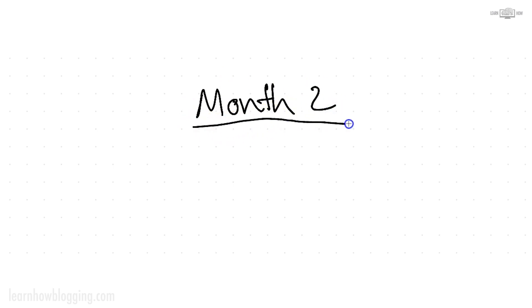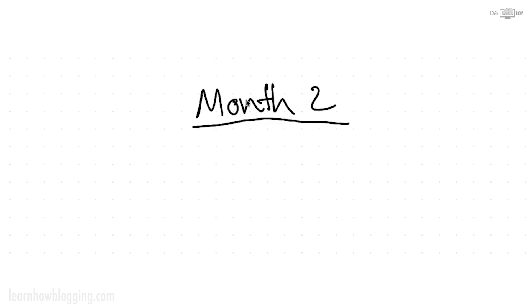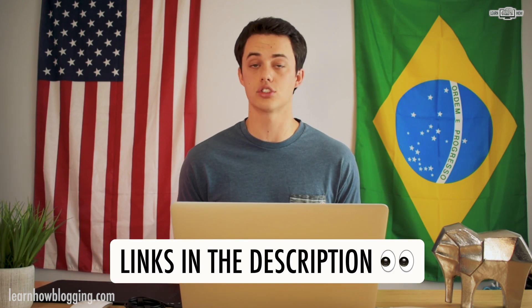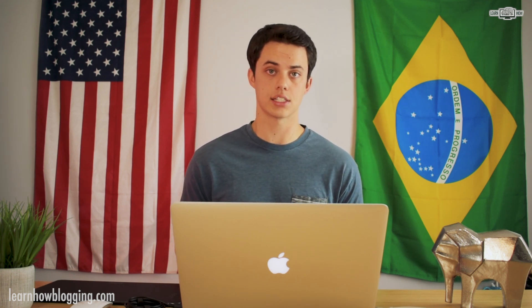Now let's move to month two. In month one you got everything set up as far as those first pages on your WordPress blog. In month two, we're going to focus more on creating actual content. But before we write any blog posts, we want to do our keyword research. Keyword research is when you research keywords that give you a good chance of ranking in Google. If you just blog about anything and everything, there's a very low chance your articles will get found. Some great free tools include Google Keyword Planner and Ubersuggest by Neil Patel.